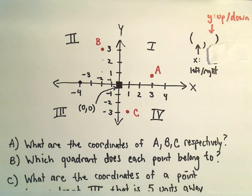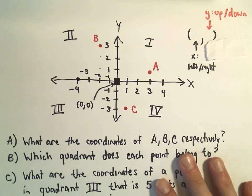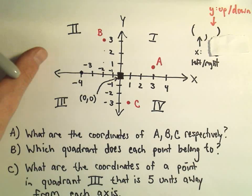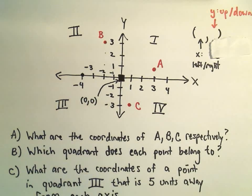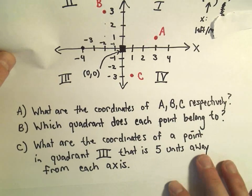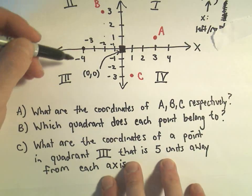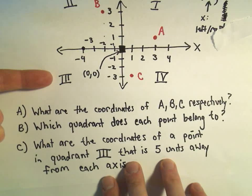Okay, so part C here, one more question. It says, what are the coordinates of a point in quadrant 3 that's 5 units away from each axis? Well, okay, so we want it to be in quadrant 3, it's got to be in the bottom left corner.